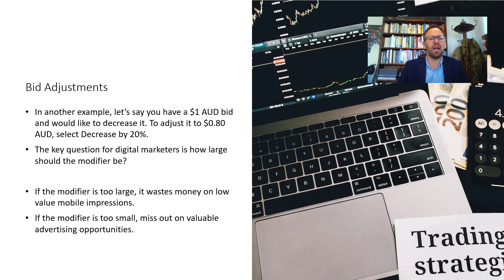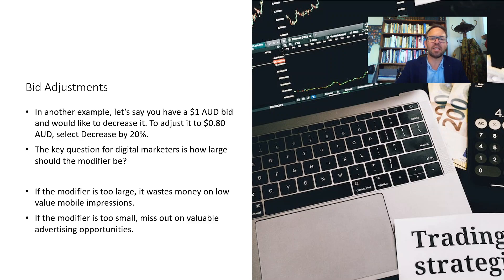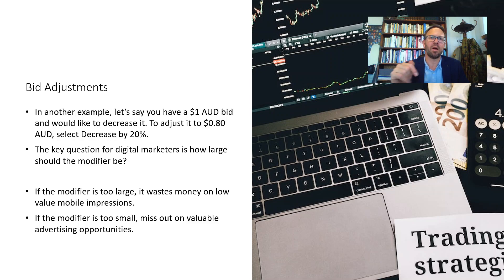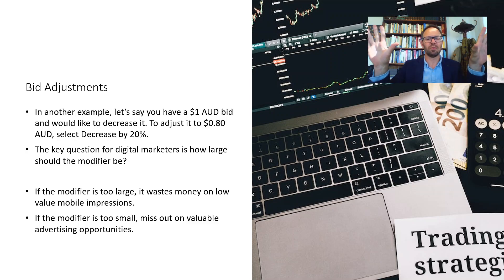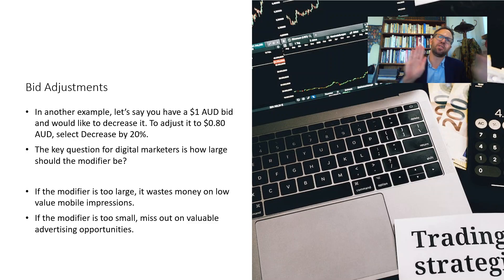In another example, if you have a $1 bid and want to decrease it by 20%, your bid becomes $0.80. This aligns with the view that mobile traffic is less valuable, so rather than your budget going equally to both desktop and mobile in a pooled campaign, you're adjusting your bidding strategy to reflect the relative value of each device type.